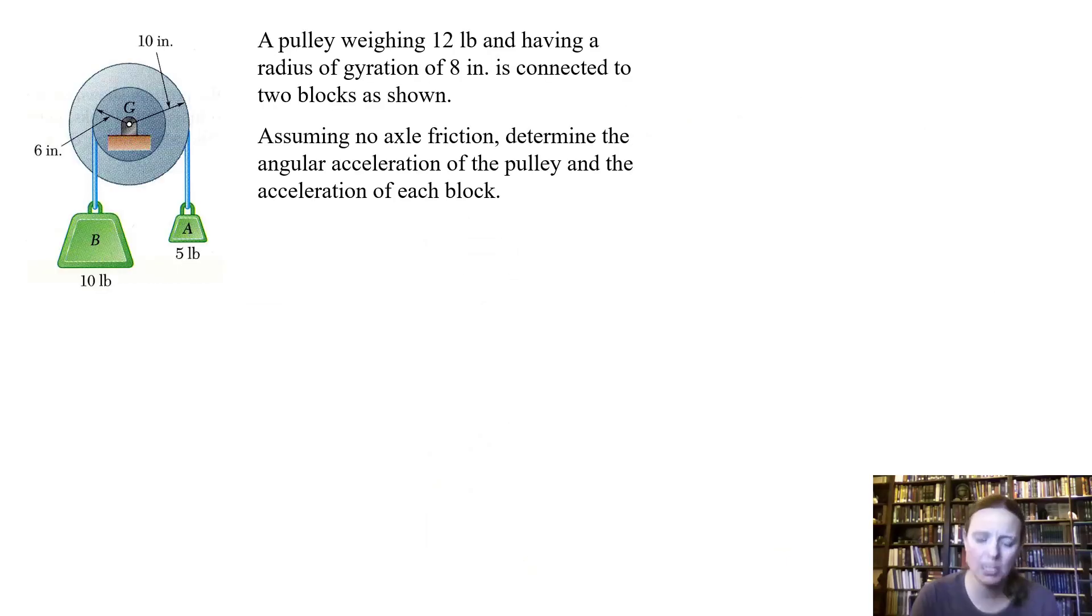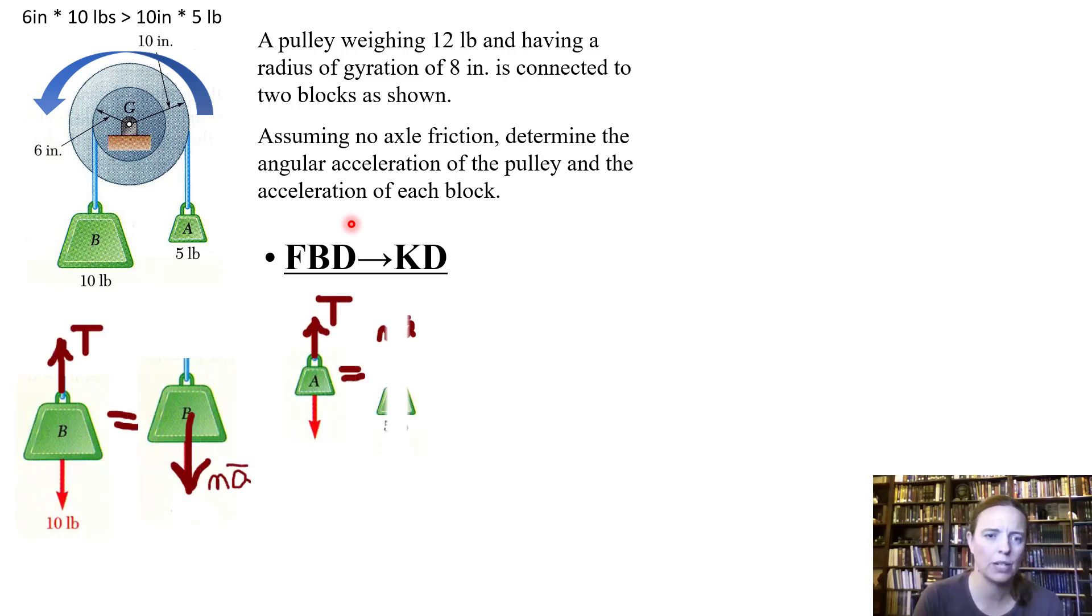Okay, so we've got a lot of different things moving around. Let's go ahead and think about what direction the motion is going in. If we do a quick moment balance around the center of mass, we have 6 inches times 10 pounds versus 10 inches times 5 pounds. So it looks like this thing is going counterclockwise - the 10 pounds will win. So we have block B going down and block A going up. Let's carve it up and walk through each piece and decide what each part of it is doing.